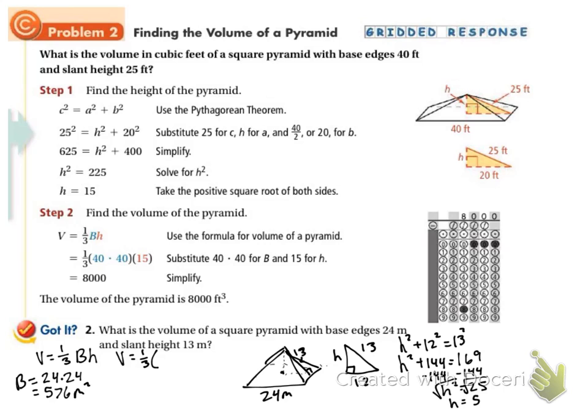V equals 1 third, 576. And then we solved for our height, and we said that was 5. And I just need to do that on my calculator. And I get 960 meters cubed.